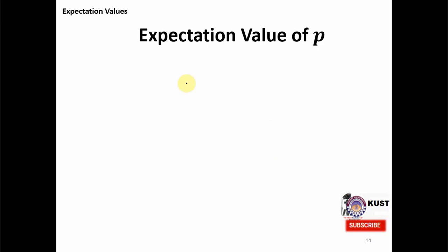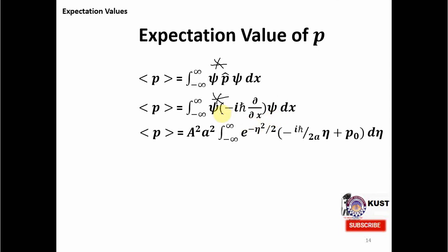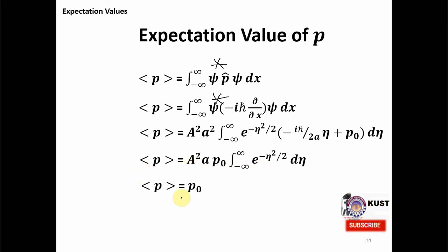Now we go to another example and calculate the expectation value of momentum. Using the same procedure, we have the integral of psi star times p-hat times psi. The momentum operator p-hat is defined as minus i h-bar del by del x. Acting on psi and integrating with psi star, we again get two integrals. The integral over eta vanishes, we again get the Gaussian integral, and inserting its value along with A squared, the expectation value of p equals p-naught.